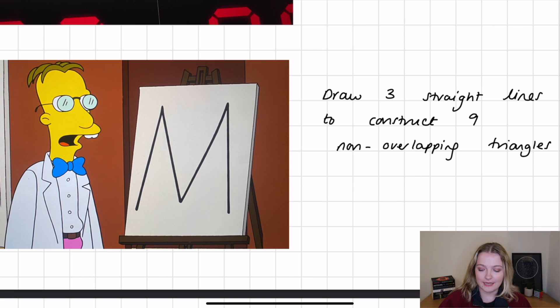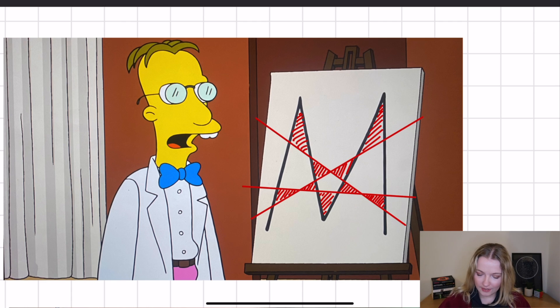The final question that we see is this here, which says draw three straight lines to construct nine non-overlapping triangles. And this is where Bart looks at Homer and notices that the M is very similar to the hair that he has around his ear. And yeah, then manages to come up with the solution. And the solution is this here. So we have a line going through here, a line going through here and another line going through here. And in doing so, we end up with 1, 2, 3, 4, 5, 6, 7, 8, 9 triangles.